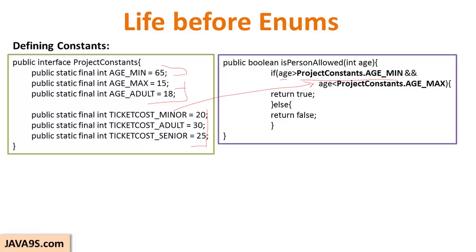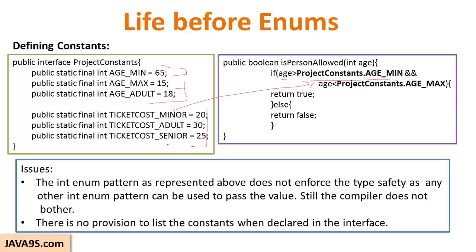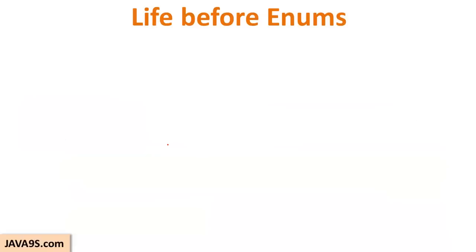That was one drawback. Another point is that sometimes you might want to iterate through all the constants and pick their values. With this interface pattern it is not possible to iterate through the constants and get those values — it is possible using the reflection package, but that is a more complex concept. These are the problems related to the int enum pattern. There might also be string constants in a project.